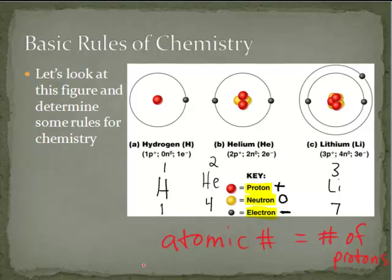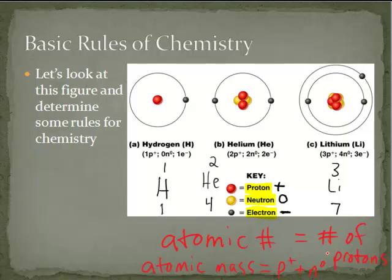So the atomic mass number equals the number of protons plus the number of neutrons. The atomic number is equal to the number of protons, and the atomic mass is the protons plus the neutrons.